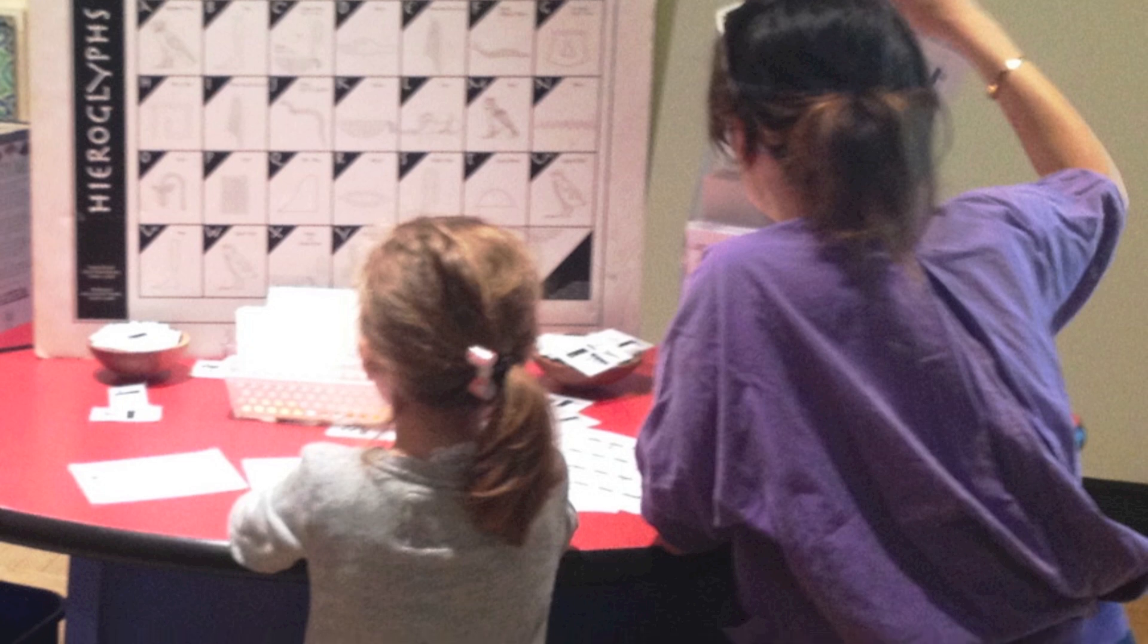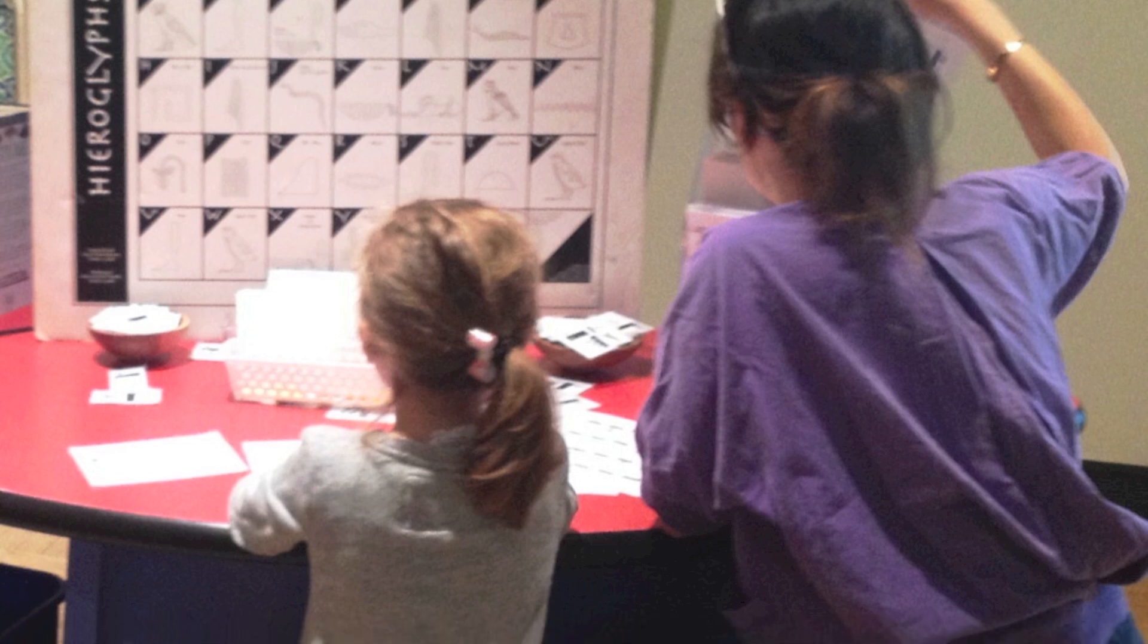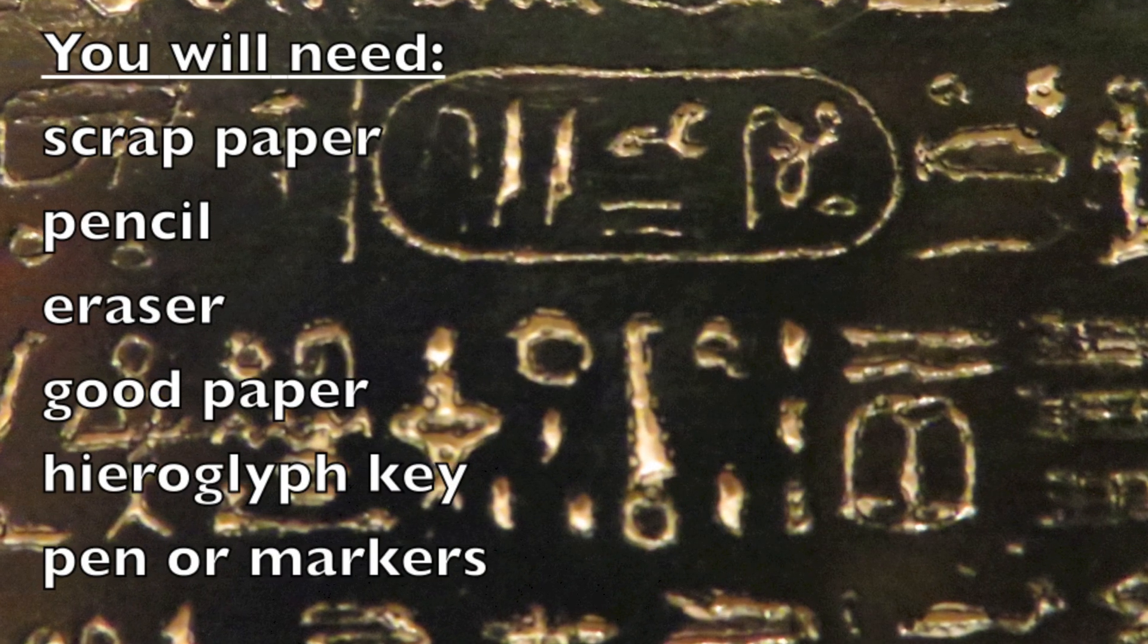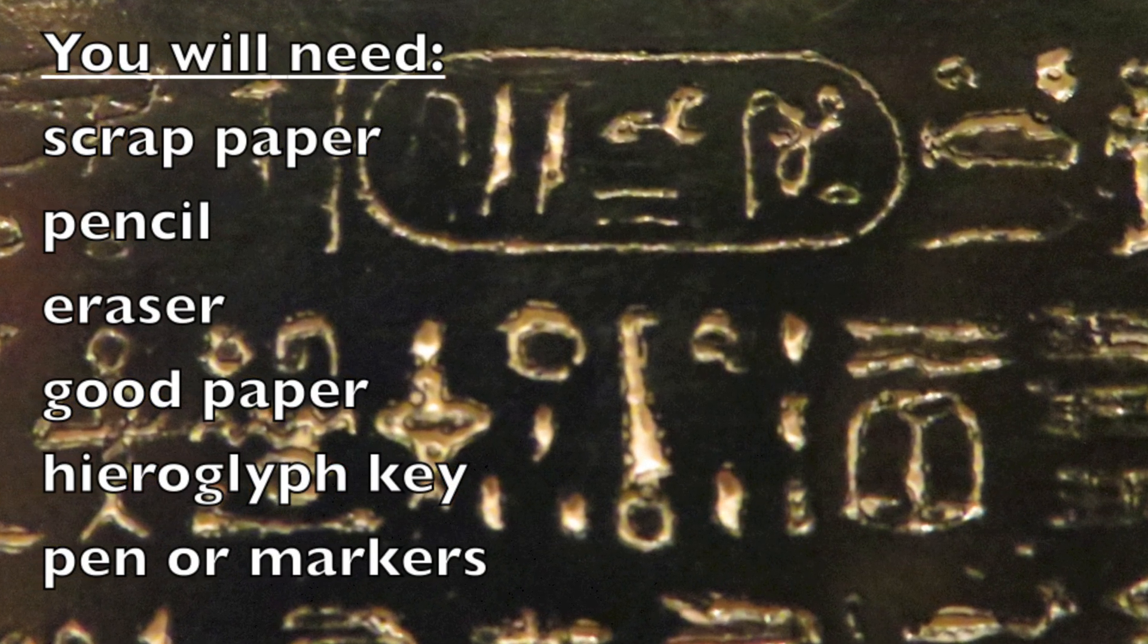When you write your own name in hieroglyphs, it's important to sound it out, not write it letter for letter. Sometimes a sound can be spelled different ways. For example, George and Judith both start with a juh sound.